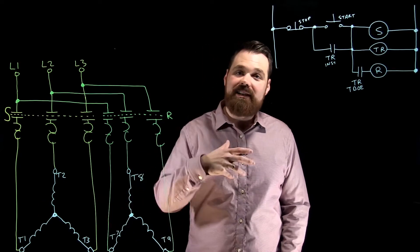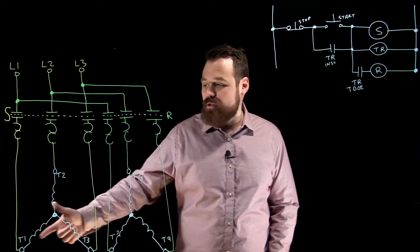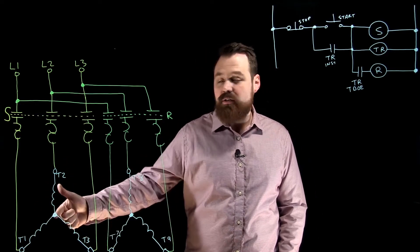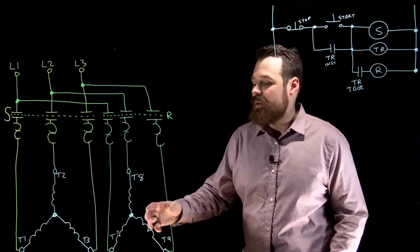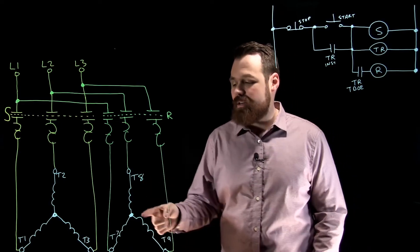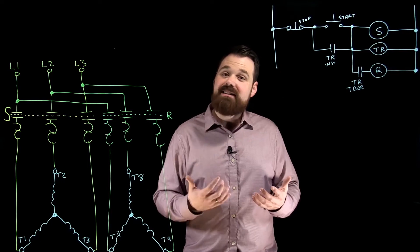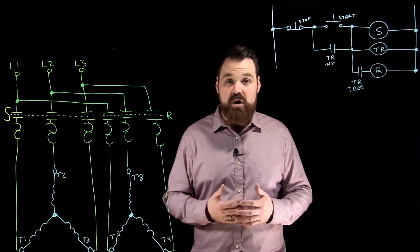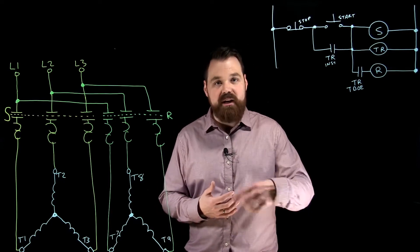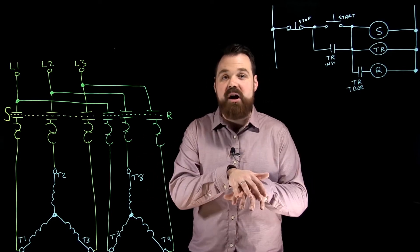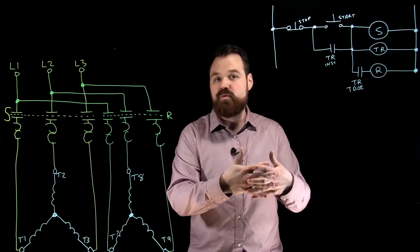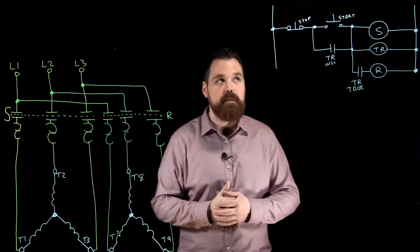So the motor leads that we'll see brought out to that junction box are T1, T2, T3, there's the internal Y connection, and then T7, T8, and T9, again with their internal Y connection. Now the idea here is we're going to basically start half of the motor to get it up to spinning, and then we're going to bring the other half online for our full voltage run or our full speed, full load run.